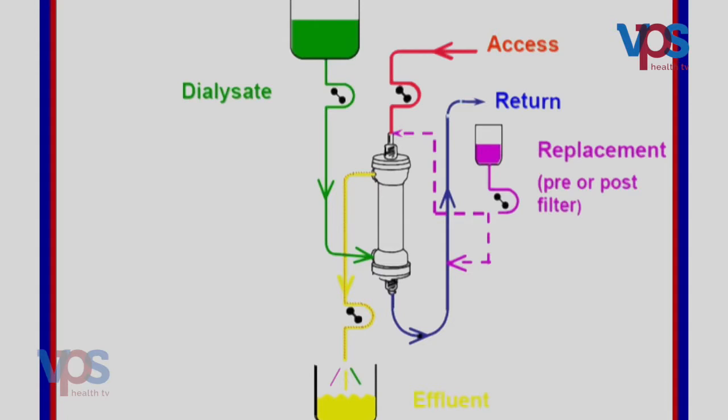Dialysis is done either twice or thrice a week depending on the patient's urine output and blood parameters. VPS Lakeshore does more than a thousand sessions of dialysis per month, and the quality and care is very good. There is also a new technique called continuous renal replacement therapy, which is used in the ICU for dialysis patients who are very critical and hemodynamically unstable.